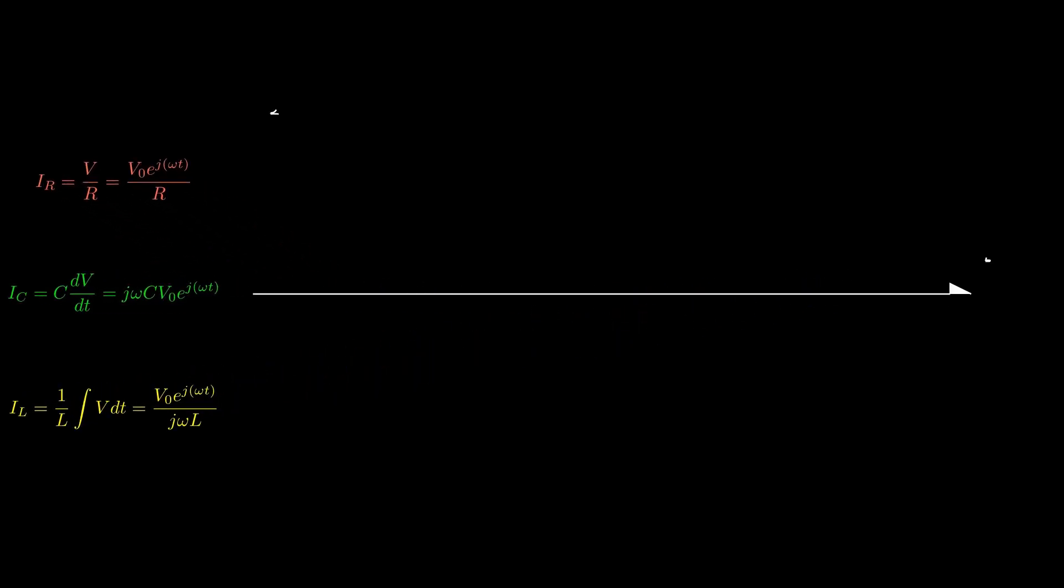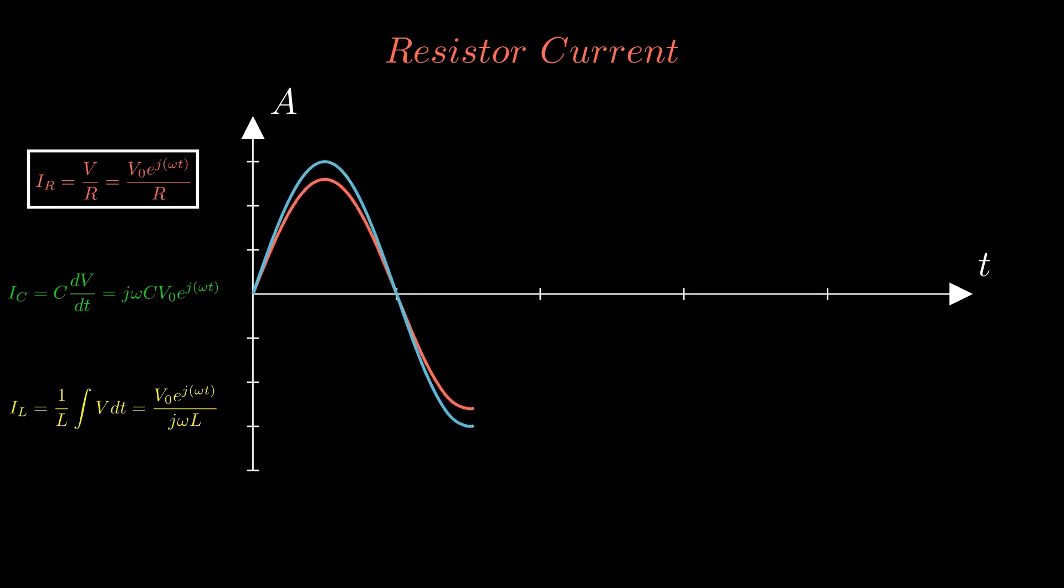Looking at our calculated expressions for current below, we can come to valuable conclusions about how current works in each of these components. There is no j coefficient in our current expression through a resistor, therefore we can conclude that the current is in phase with the voltage.